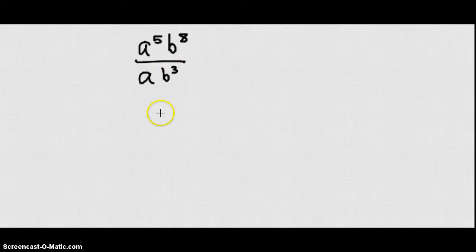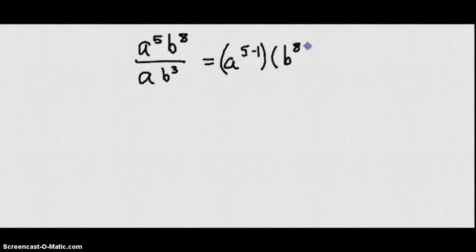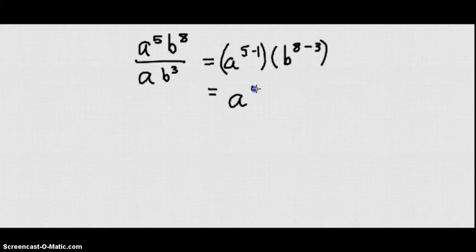I have a to the fifth divided by a, which gives me a to the five minus one. And b to the eighth divided by b to the third gives me b to the eight minus three power. So I end up with a to the fourth b to the fifth — and that's my final answer.